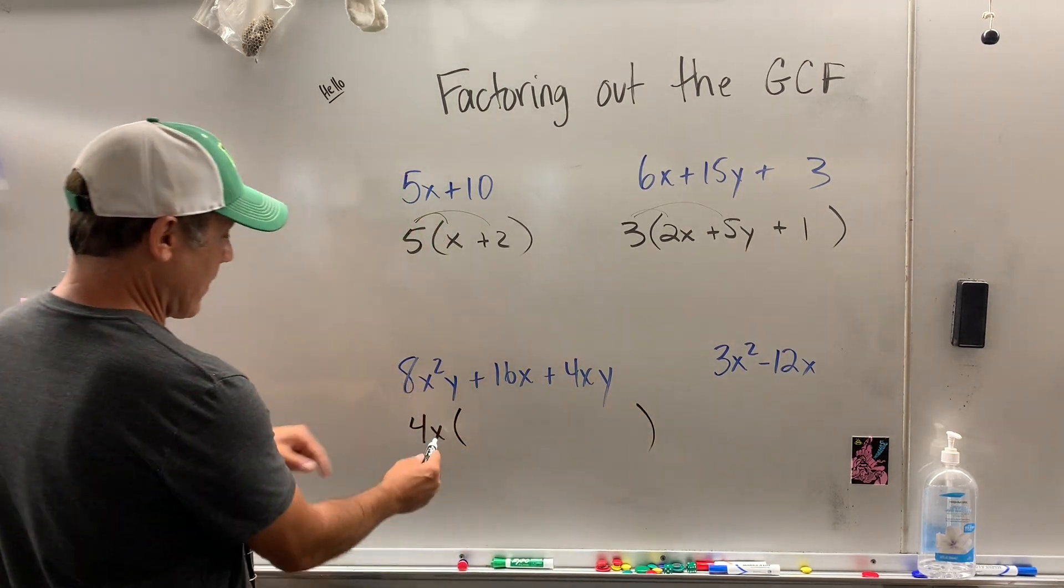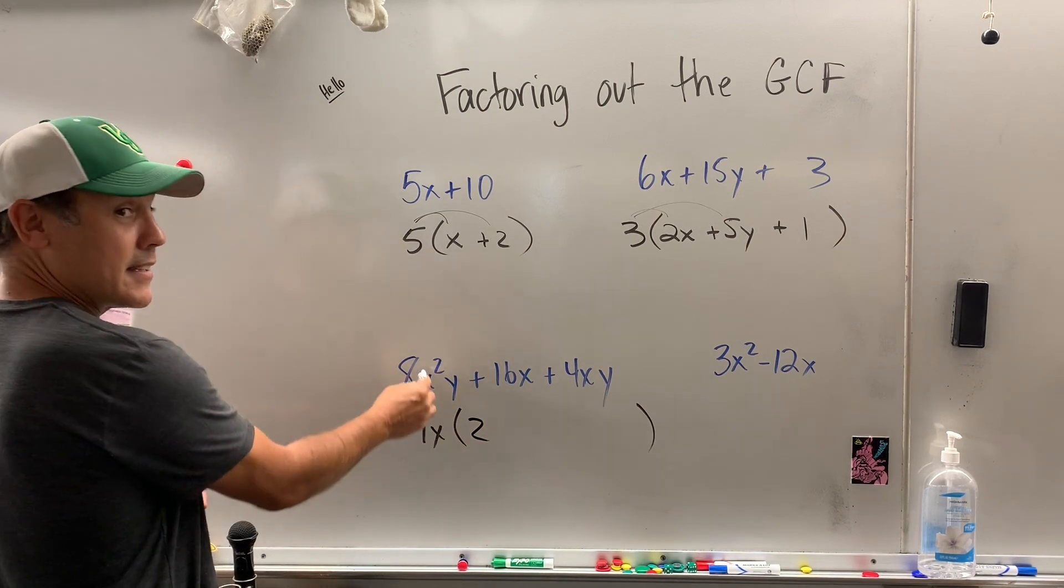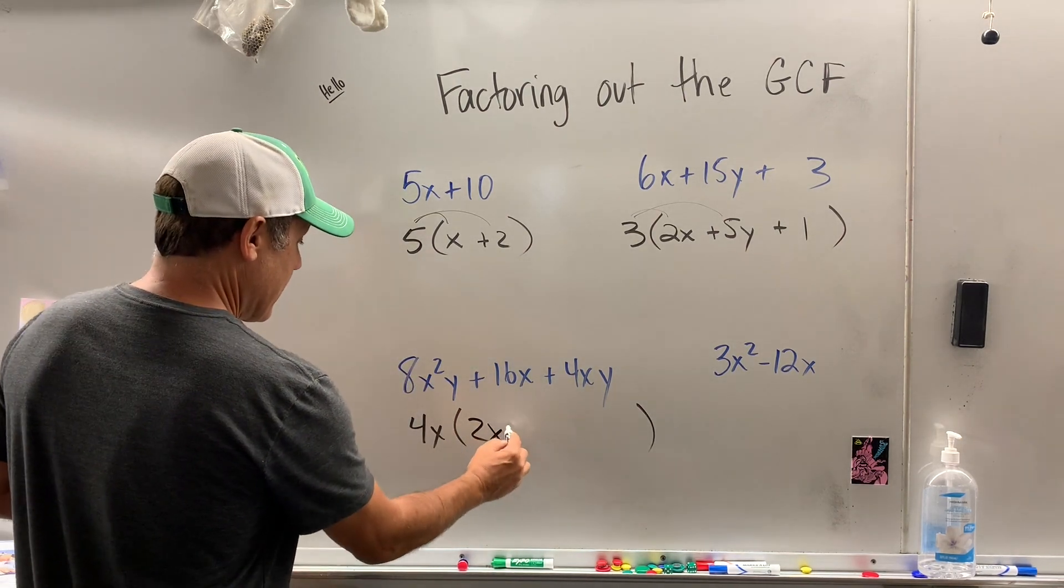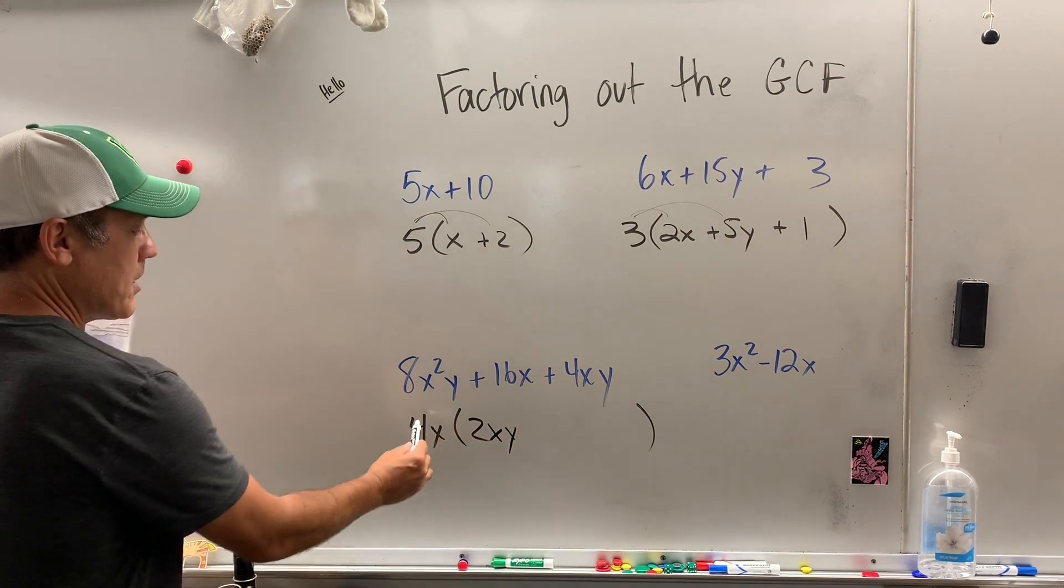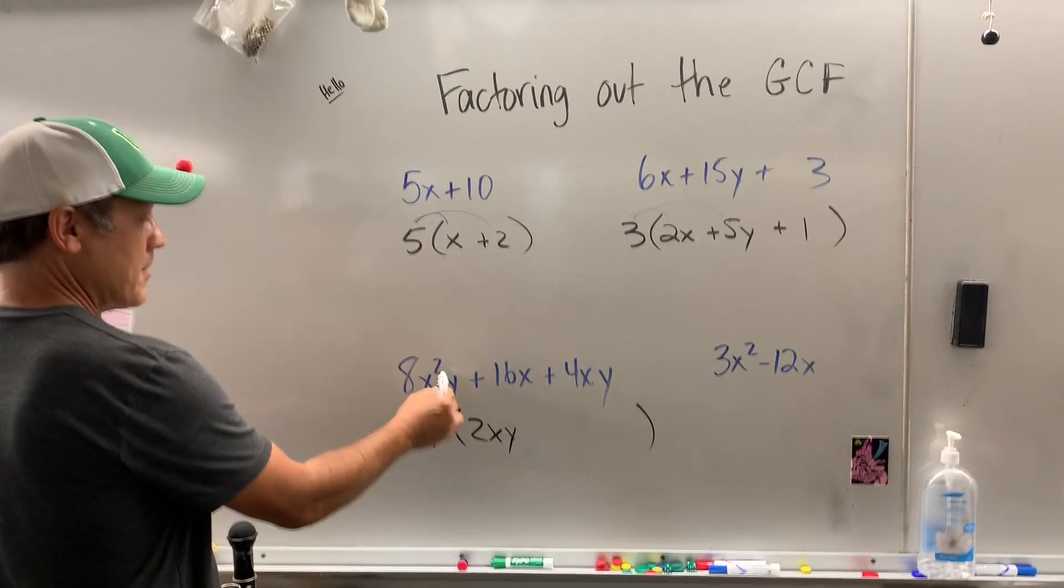Big parentheses. Okay, 4x times what gives me that? Well, 4 times 2 is 8. I need one more x to get to x squared, and then I need the y. Let's just double check. 8x squared, so you get 4 times 8, x times x, bingo.